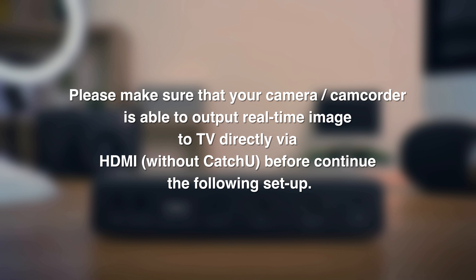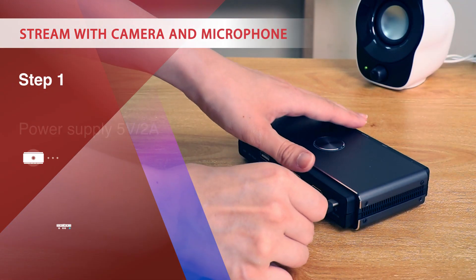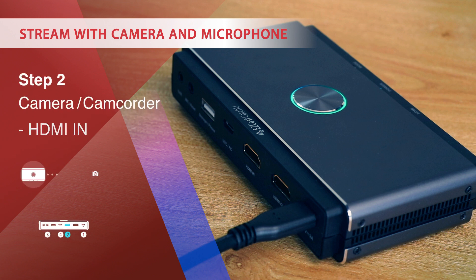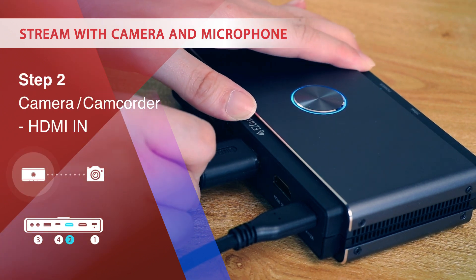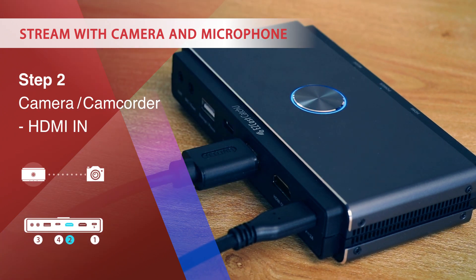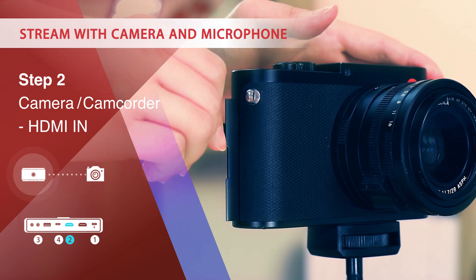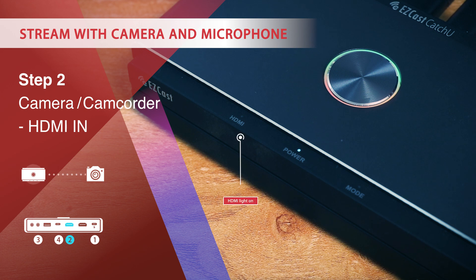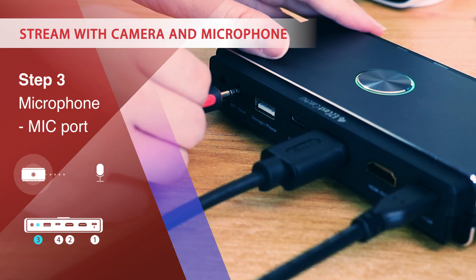Before continuing, follow these setup steps. Step 1: plug in the power adapter. Step 2: connect your camera or camcorder by plugging into the HDMI-in port from your camera's HDMI-out. Prepare an HDMI adapter if needed. Step 3: